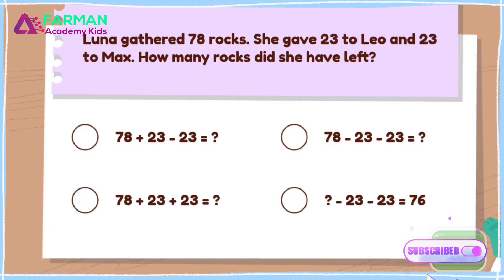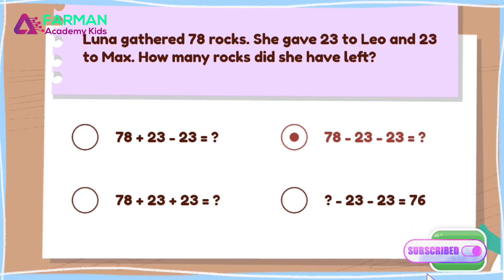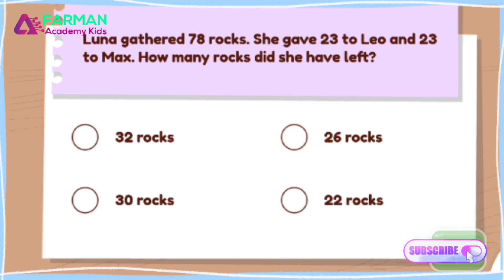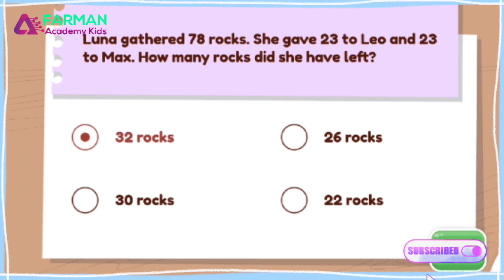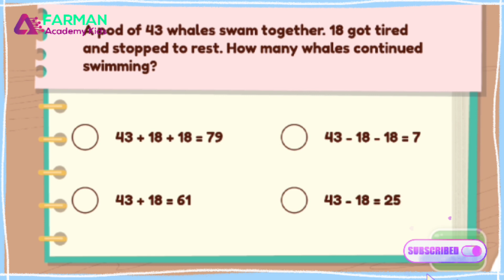Which equation matches the word problem? 78 minus 23 minus 23 reflects the word problem. Please pick the answer to the word problem. How many rocks did she have left? Which equation shows that? Good thinking! 78 minus 23 minus 23 is 32. She has 32 left.